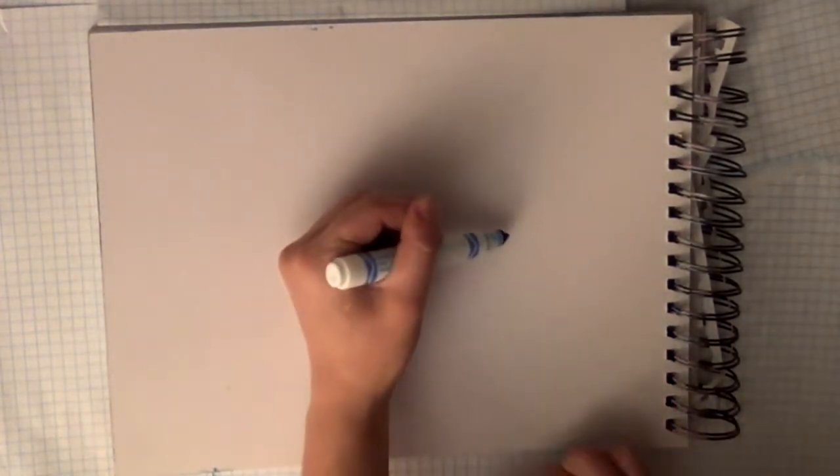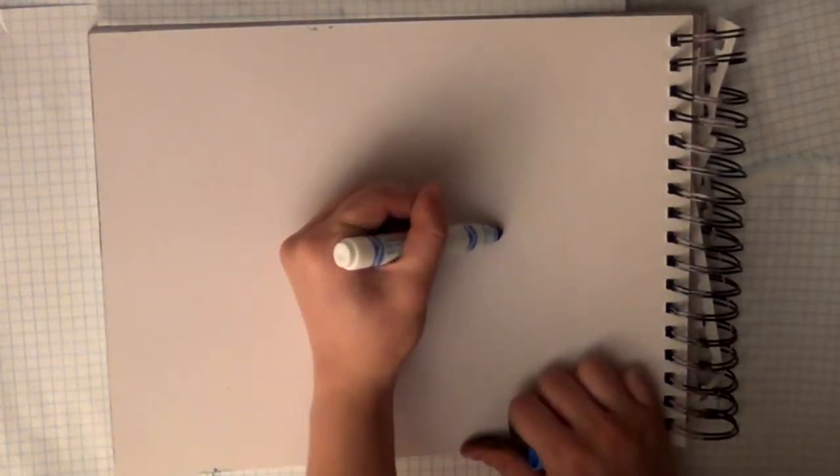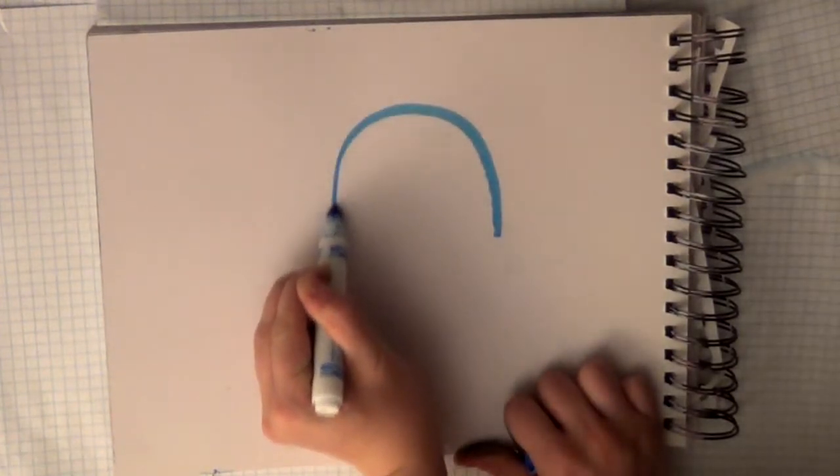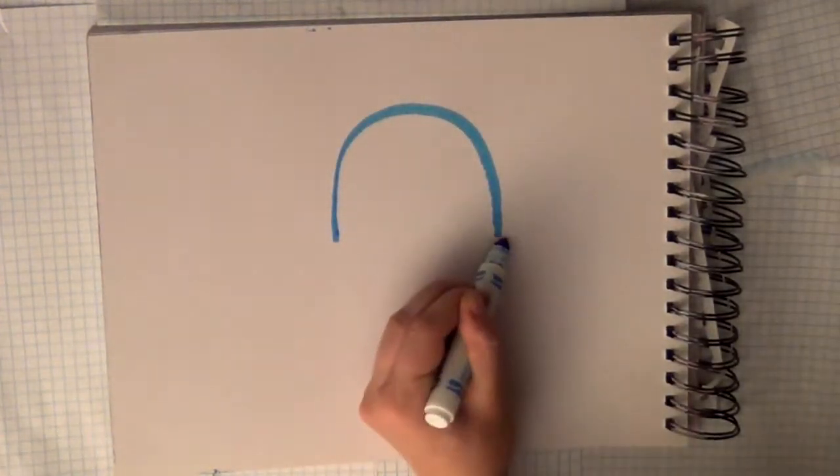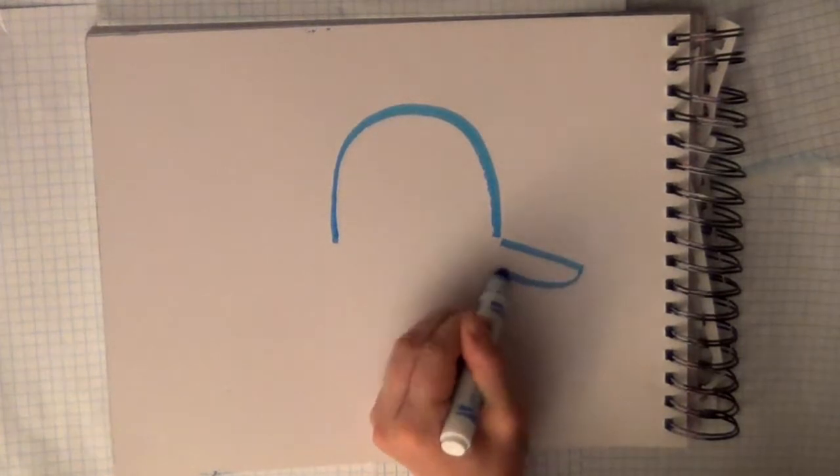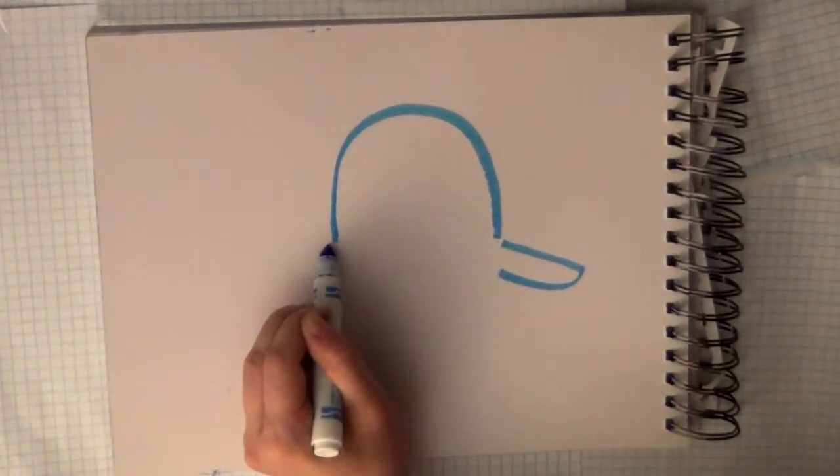Step one: draw a half circle pointing downwards. Step two: make two triangle-like fins pointing outwards.